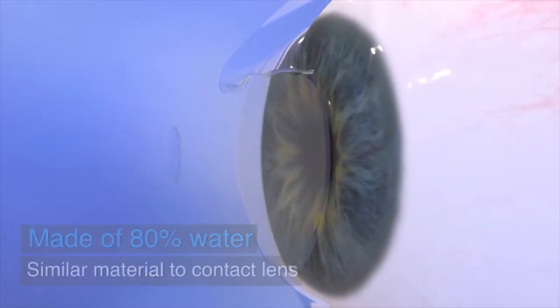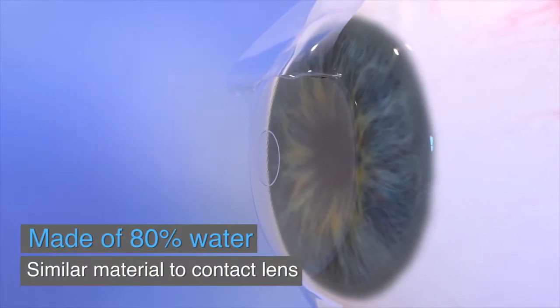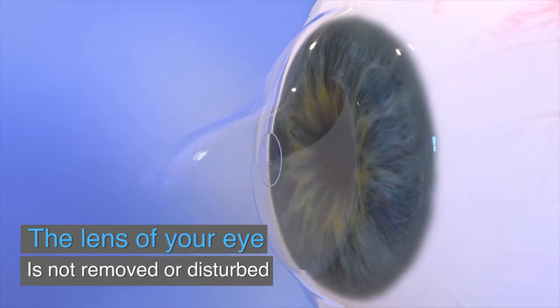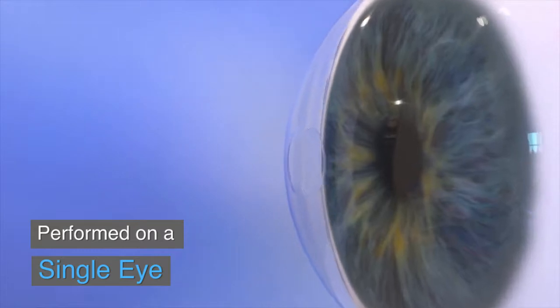Raindrop is a small transparent disc made of approximately 80% water and is similar material to a soft contact lens. Unlike other procedures to fix the need for reading glasses, Raindrop does not remove or disturb the lens of your eye.